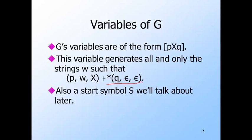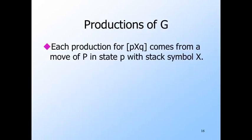And there is one more variable of G, the start symbol S. There may be many productions for variable [p, X, q]. For each move of the PDA from state p with X as the top of the stack, we produce one or more productions.